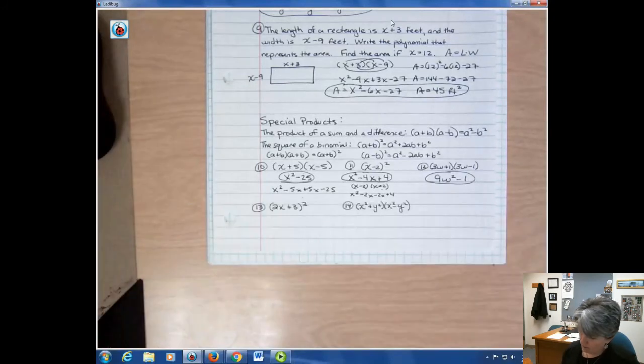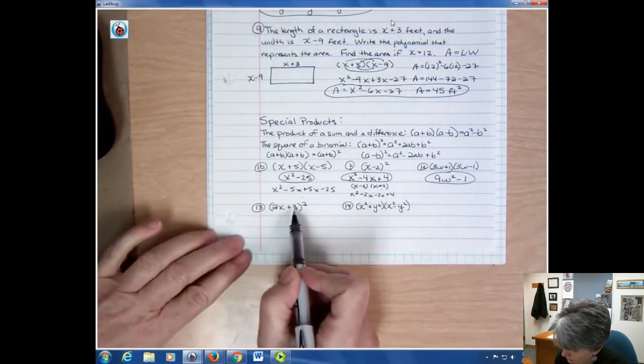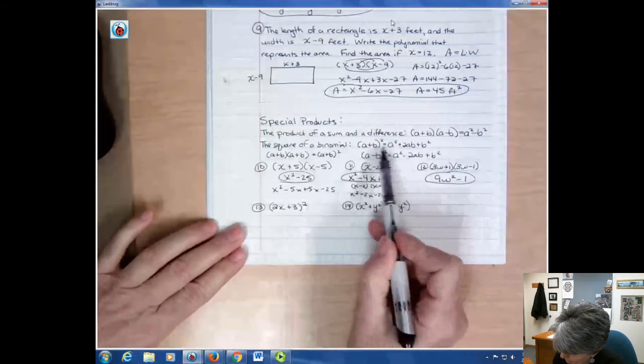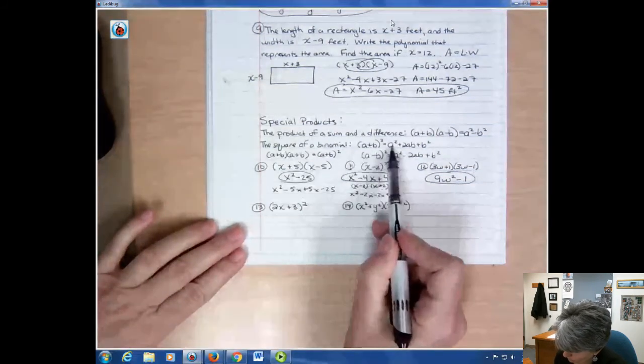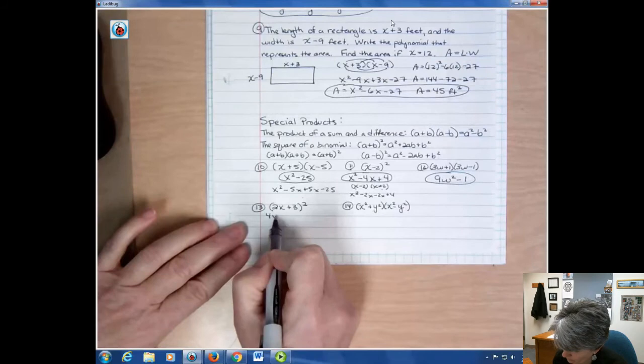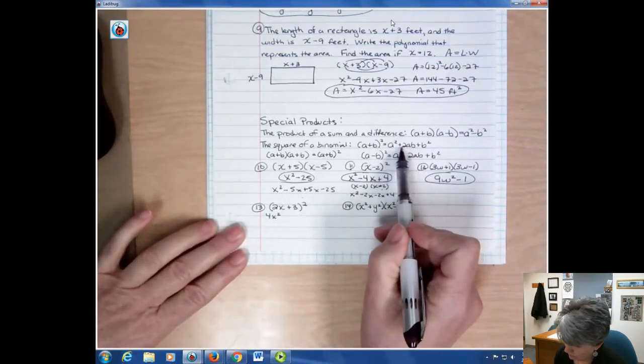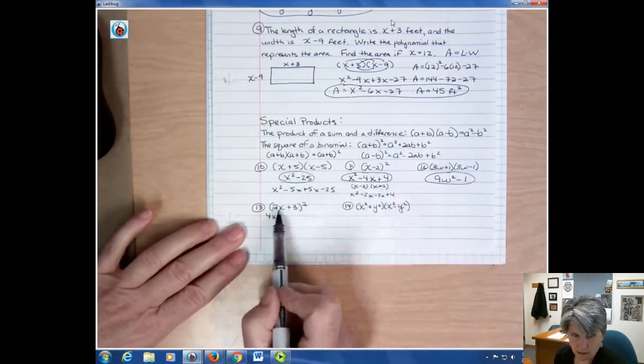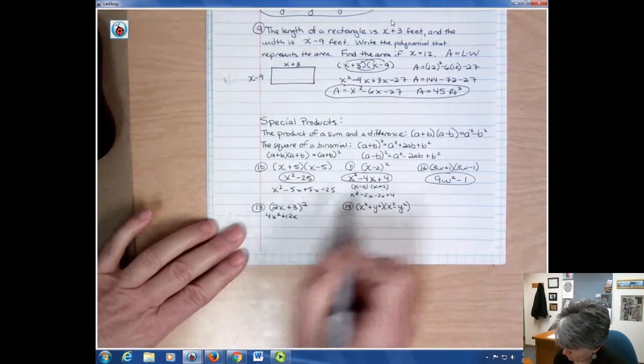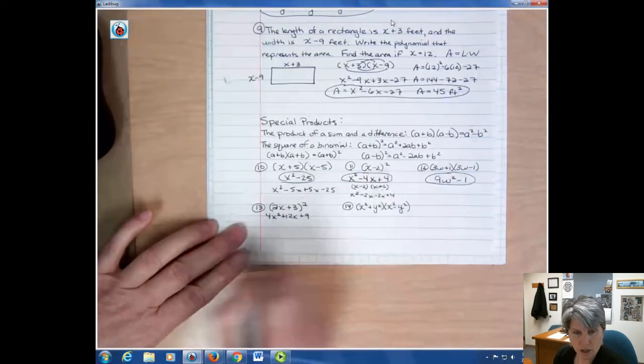Then you could do the same thing with this. You can use the shortcut, or you can write it out. What's the shortcut? Well, this is a plus. So we're looking at this. So it says square the first term. So you go to the first term and square it. 2x times 2x is 4x squared. Then you multiply your two terms together and then double it. So 2x times 3 is 6x, and double it, and you get 12x. And then you square the last term. 3 times 3 is 9. That's always going to be a plus. So there's my answer.